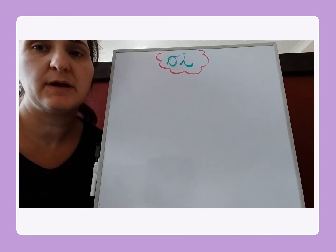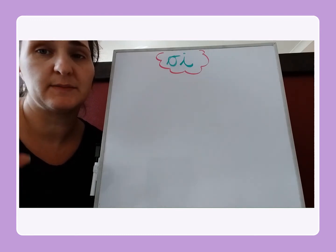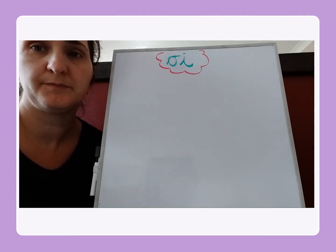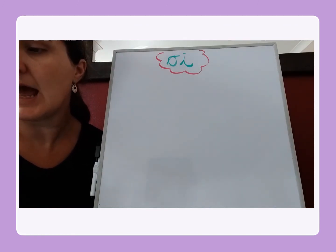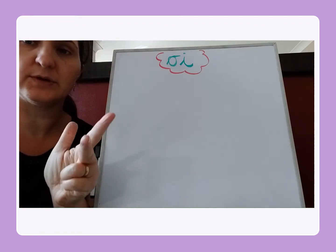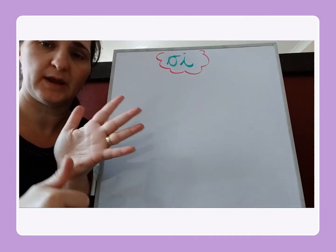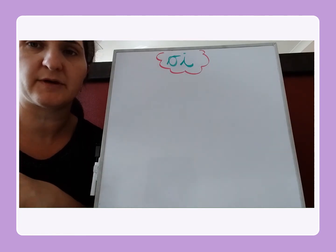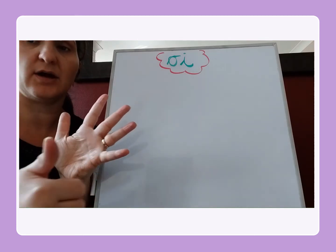Today we're looking at the digraph OI where the O and the I come together to make the one sound OI, like in oil, toil, foil. The sentence we're going to write today is: I put oil in the car. I put oil in the car. That sentence has got six words in. Let's repeat it one more time, then you might want to pause the video while you have a go at writing the sentence yourself. I put oil in the car.